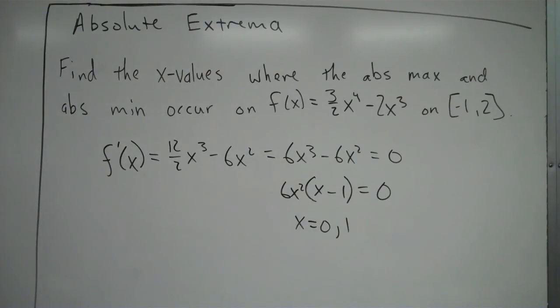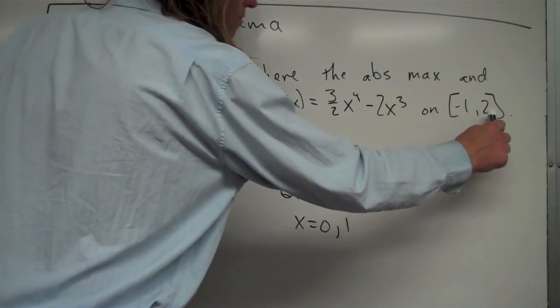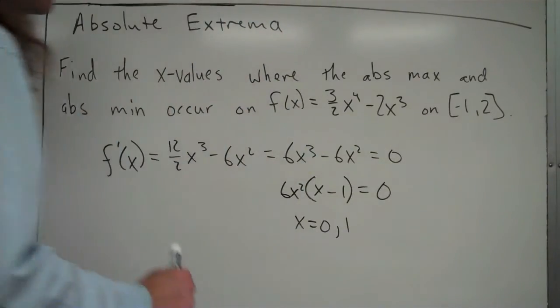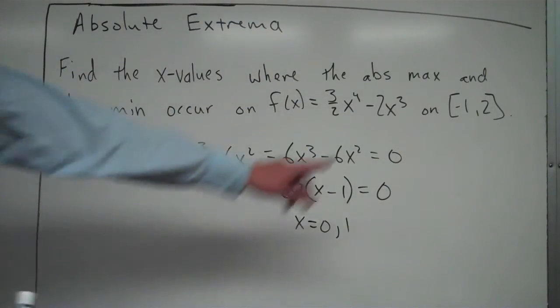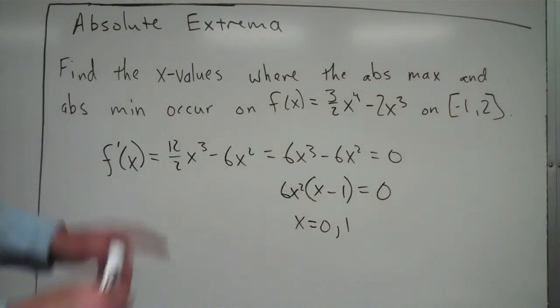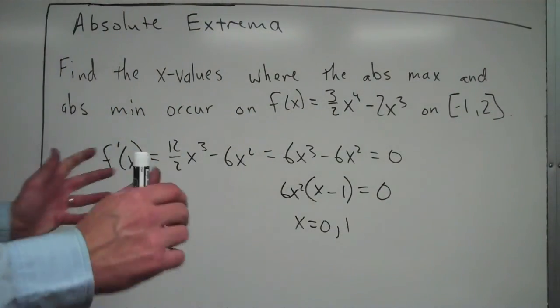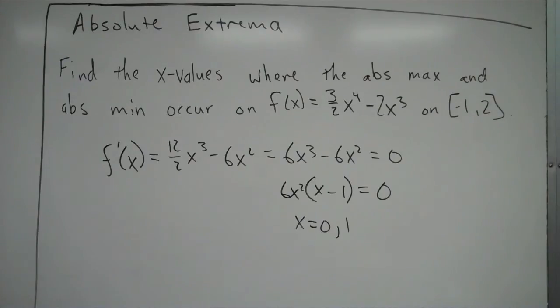So now I have -1, 2, 0, and 1. Those are my four possibilities. Negative 1 and 2 because those are endpoints. Zero and 1 because that's where the derivative or slope equals 0 on our function.